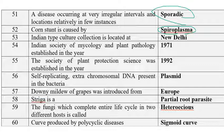The Indian Type Culture Collection (ITCC) is located in New Delhi. The Indian Society of Mycology and Plant Pathology was established in the year 1971 and publishes a journal from Udaipur. The Society of Plant Protection Science was established in the year 1992.